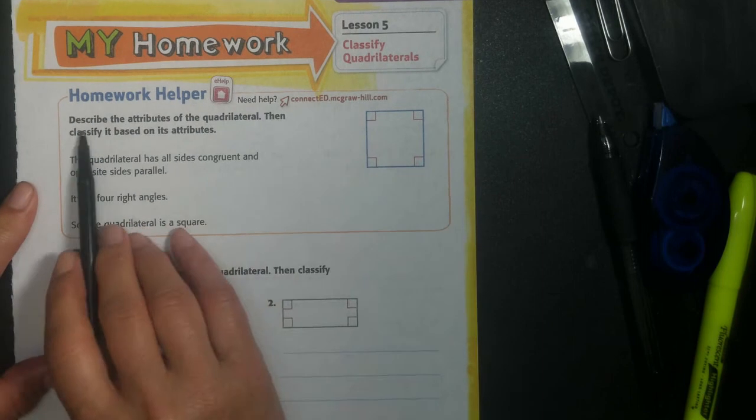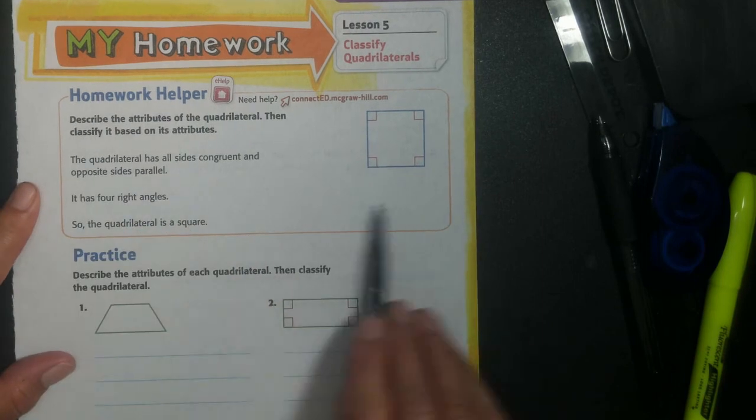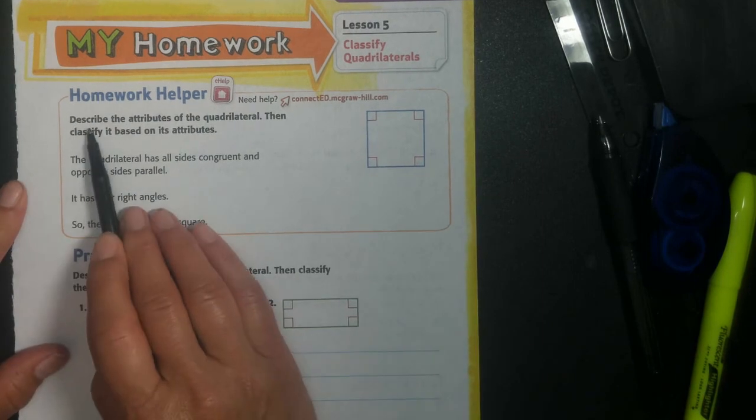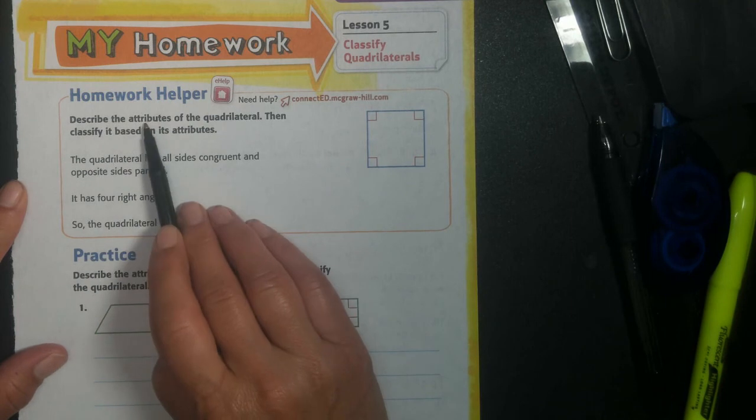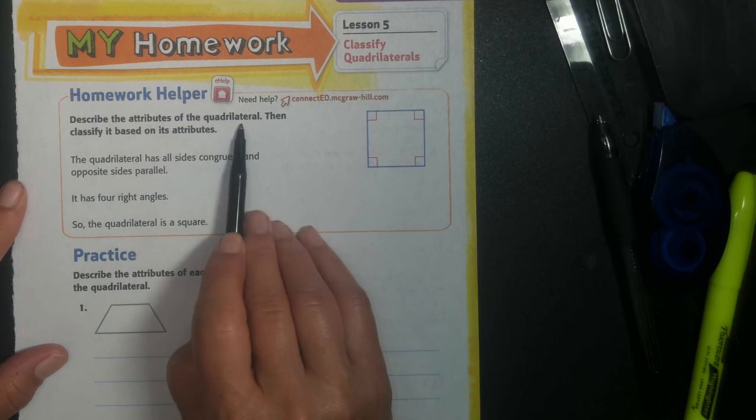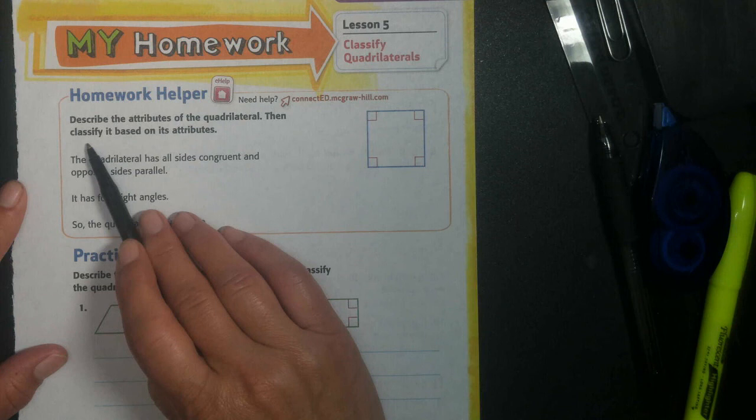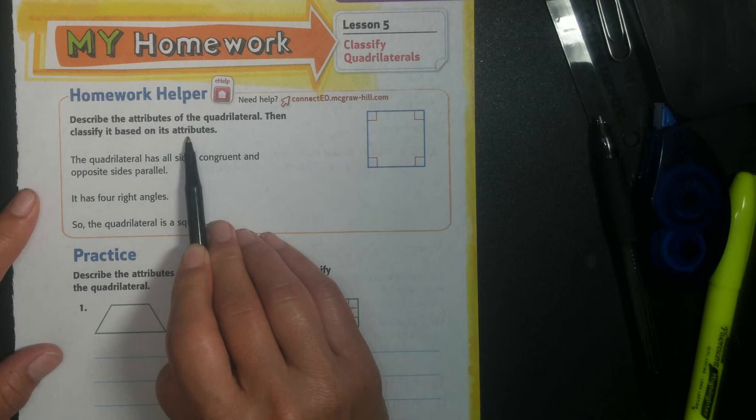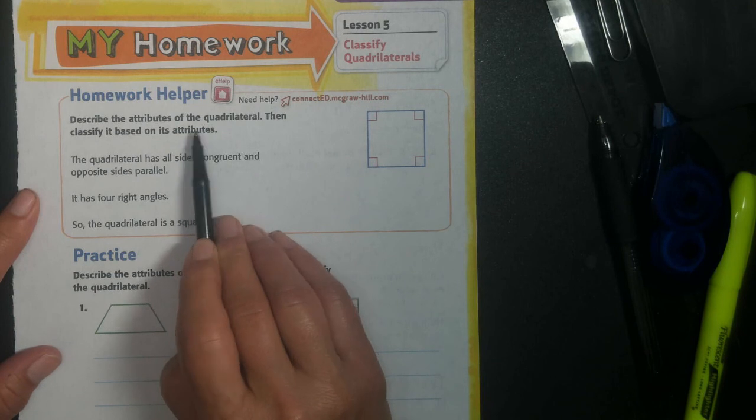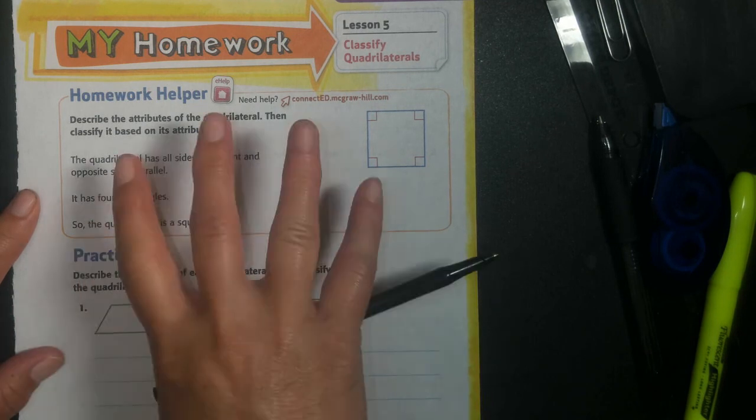It always gives us a little problem so we remember what we did during the day. Describe the attributes of a quadrilateral, right? Your attributes are what you look like, what makes you you. So what makes a quadrilateral a quadrilateral? Then classify it based on its attributes. And there are different kinds of quadrilaterals. I know you already know squares and rectangles, right? Both are quadrilaterals. A quadrilateral has four sides. But there are other shapes that also have four sides.